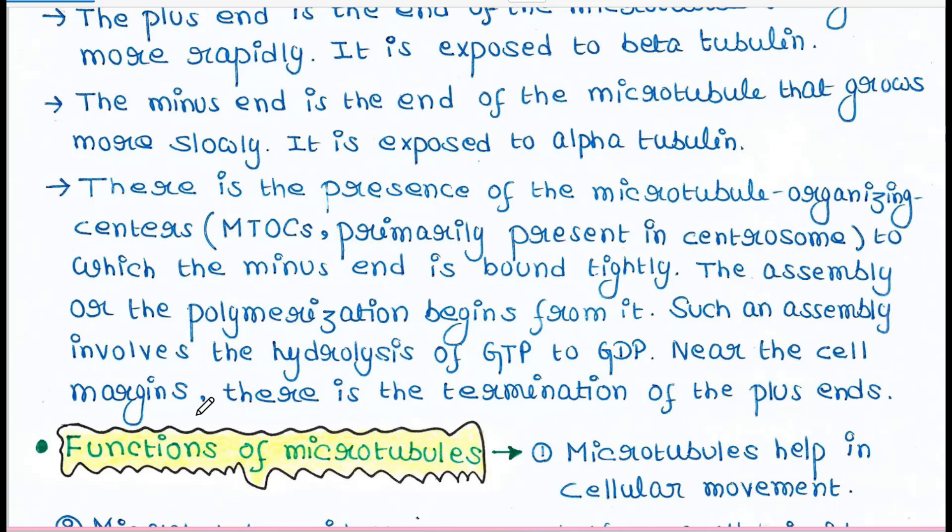Near the cell margins or near the periphery of the cell, there is the termination of the plus ends. So minus ends will be there in MTOCs. That means they will be near the centrosome, and the plus ends will be there in the margin of the cell, in the periphery of the cell.